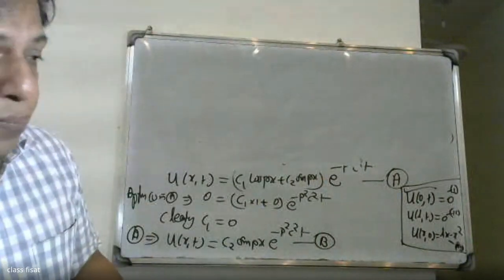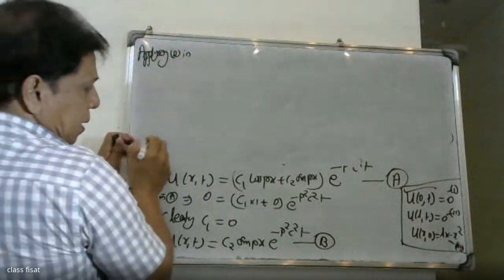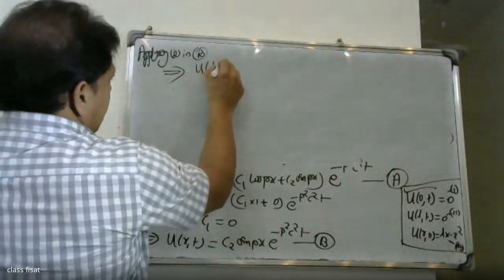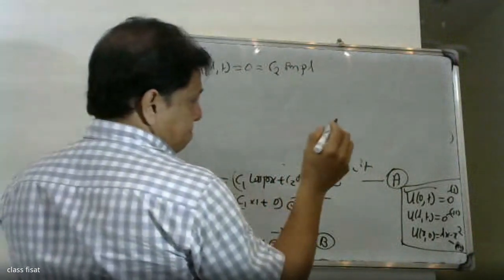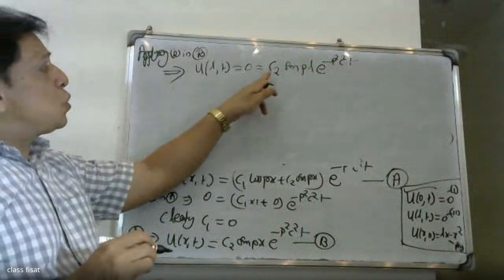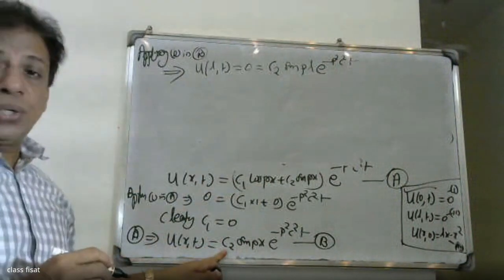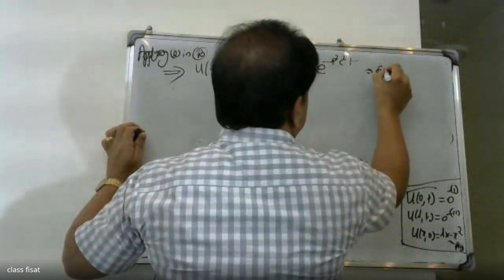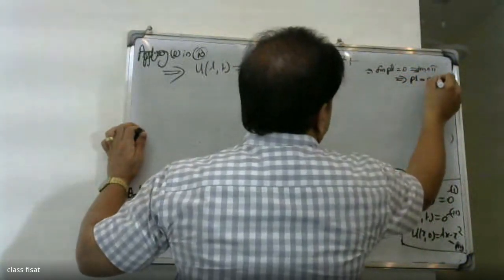Apply condition two in equation B: u(L,t) = 0. Substituting x=L: c2·sin(pL)·e^(−p²c²t) = 0. Since c2 and e^(−p²c²t) are not zero, sin(pL) = 0. Therefore sin(pL) = sin(nπ), which gives p = nπ/L.